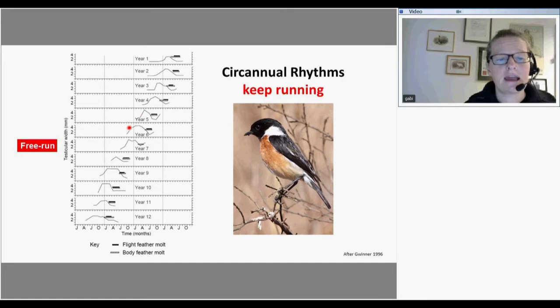Testes grow and then they molt. But you can see the internal year of this bird is getting shorter. Every year there's an advance. Every year the bird starts to do this a bit earlier until he's actually doing it in the middle of winter instead of in spring. So again we have this free run that we've seen under an experimental condition, just like we've seen for the circadian rhythm in the hamster. Circannual rhythms as well keep running. They just keep going even if there is no rhythmicity in the environment. Again this is a rhythm that comes from within the organism and is not driven by the environment.